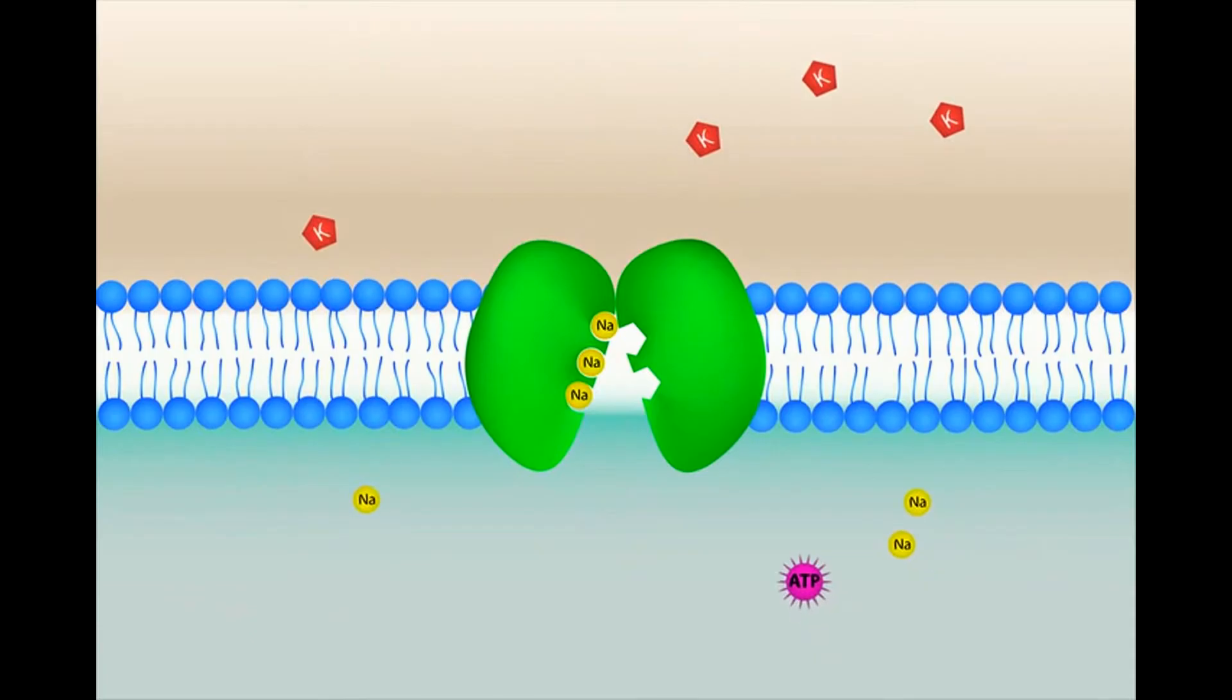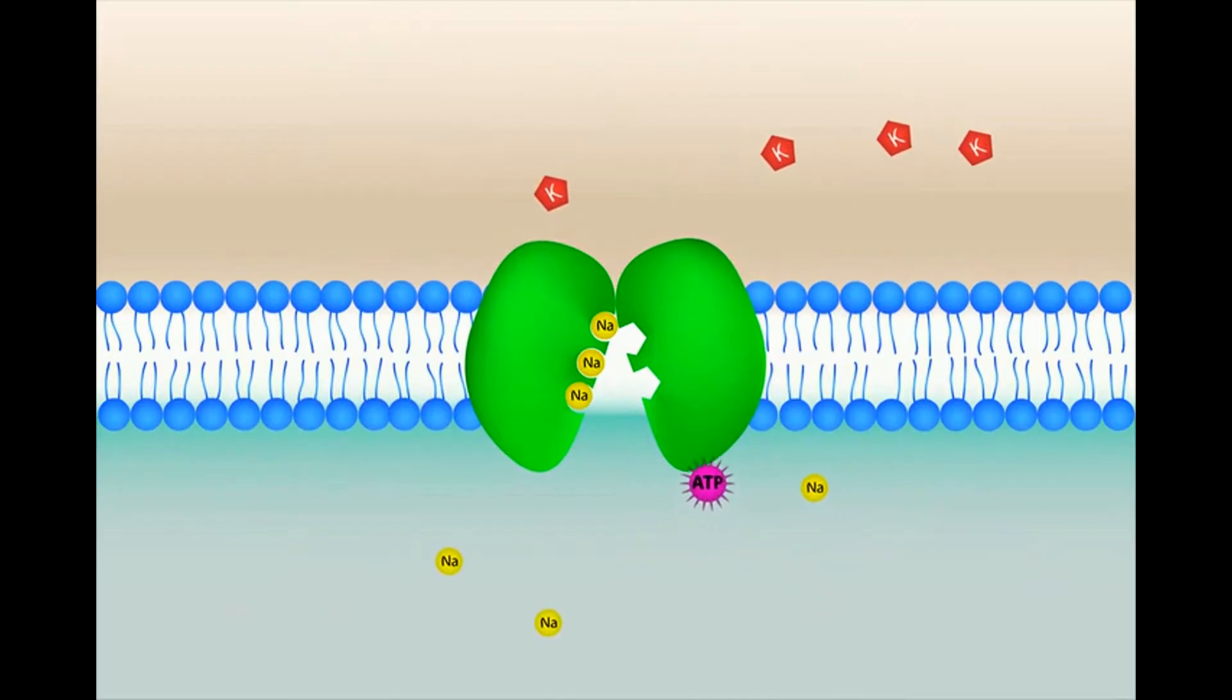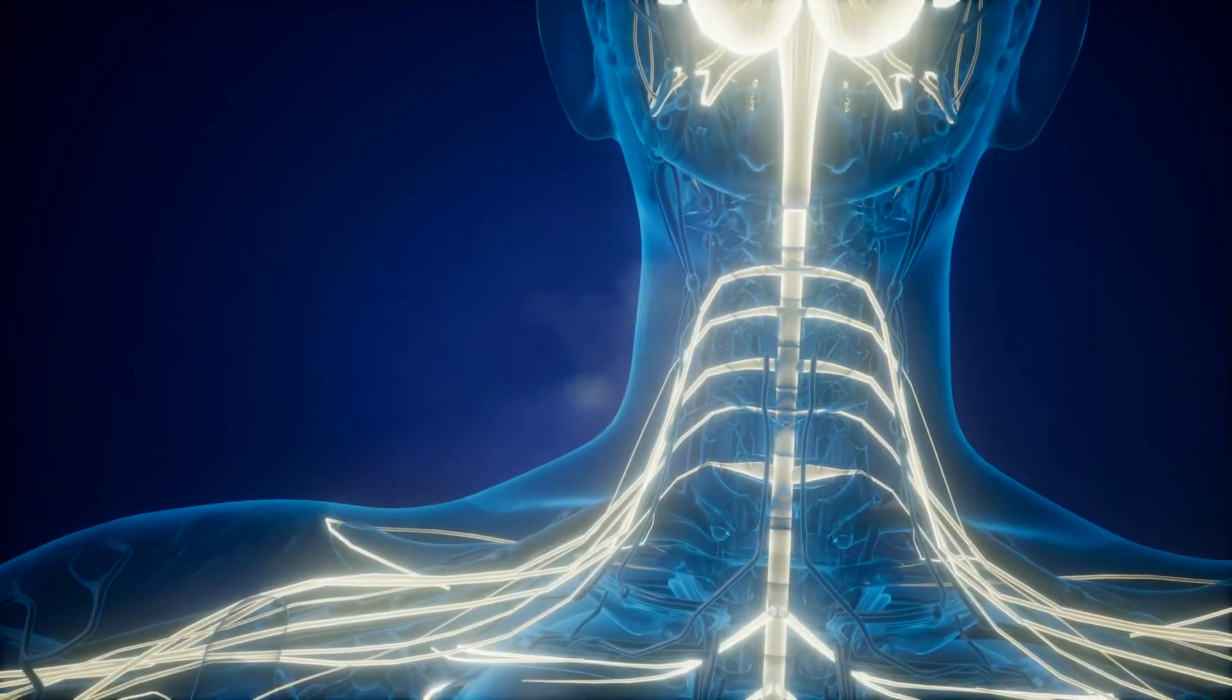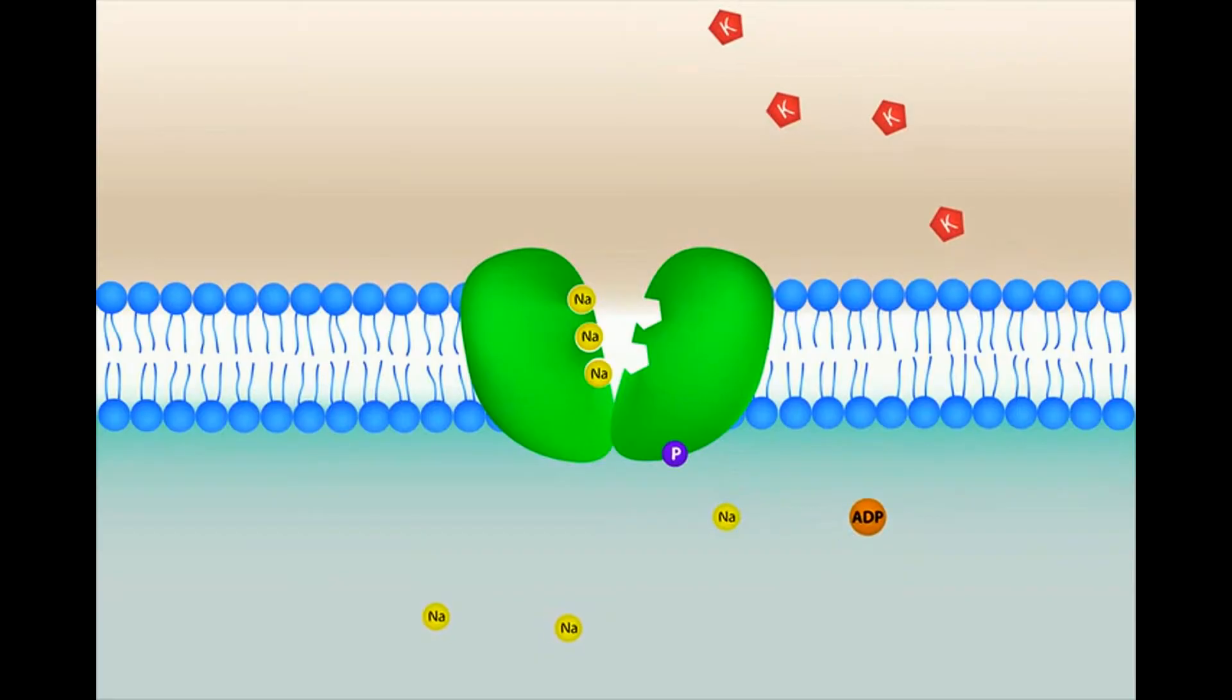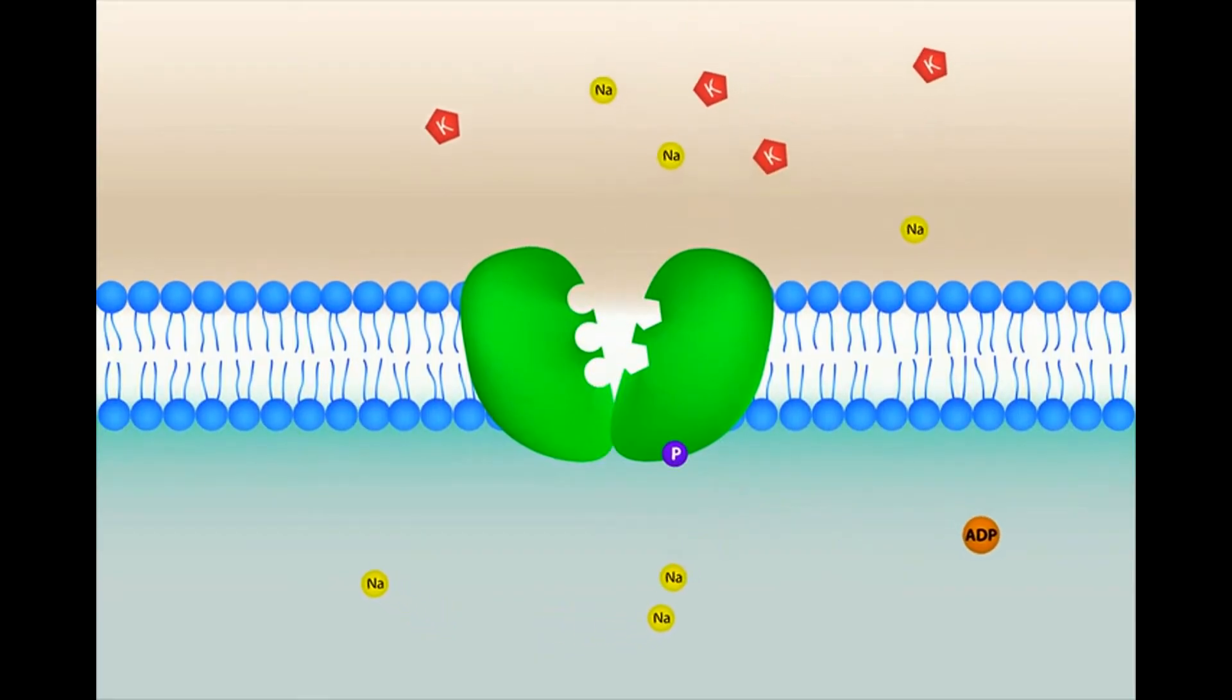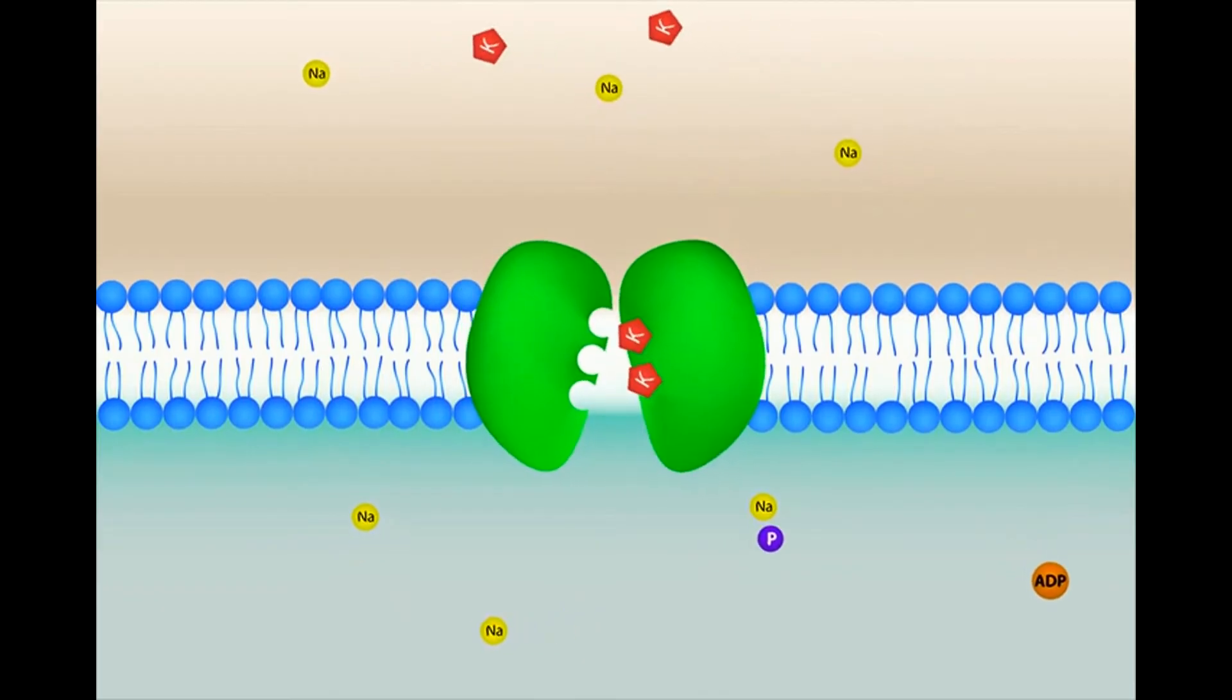Sodium and potassium are essential for proper electrolyte balance in your body and they're very important for your nervous system. The sodium-potassium pump moves sodium ions out of the cell and potassium ions into the cell.